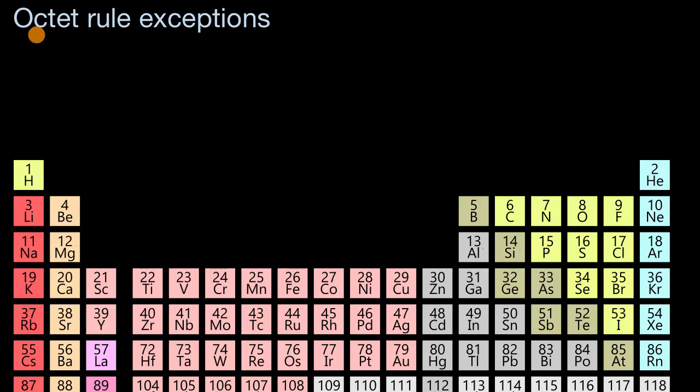In this video, we're gonna start talking about exceptions to the octet rule. The octet rule is this notion that atoms tend to react in ways that they're able to have a full outer shell with eight valence electrons.